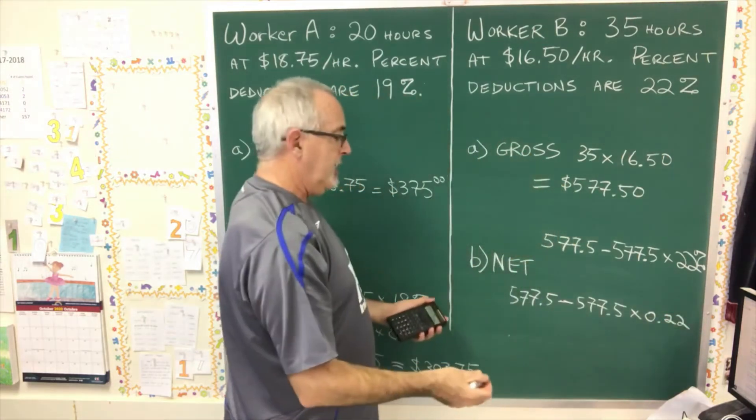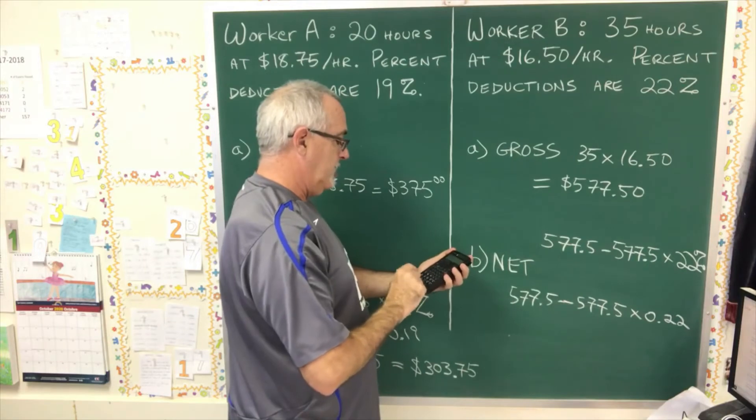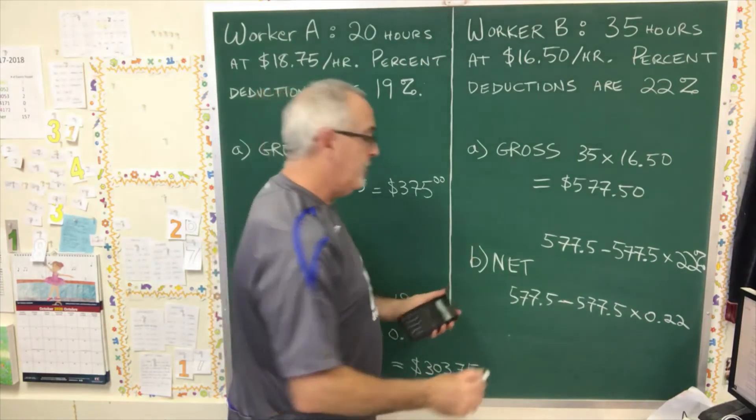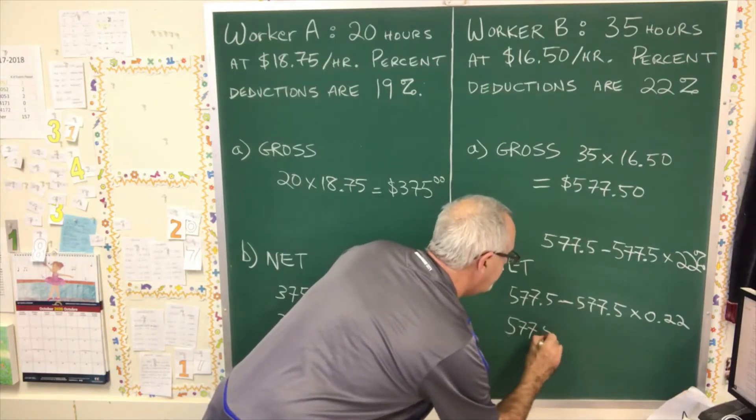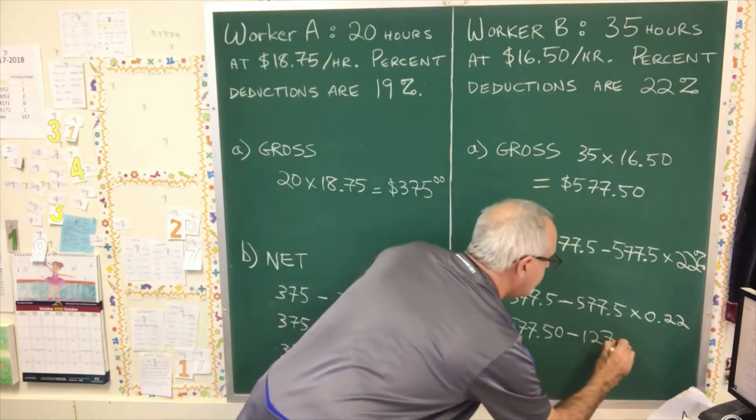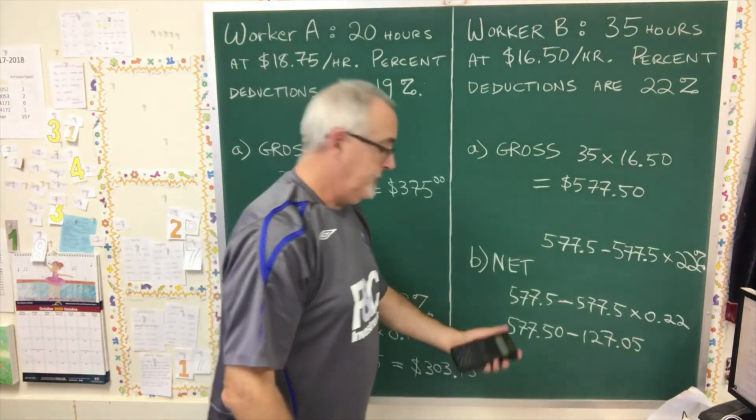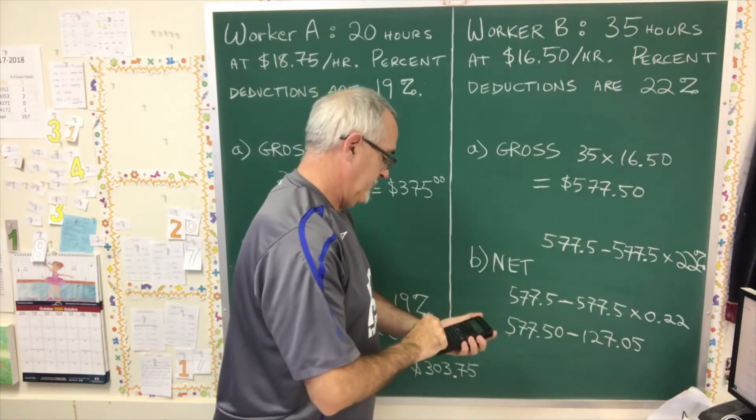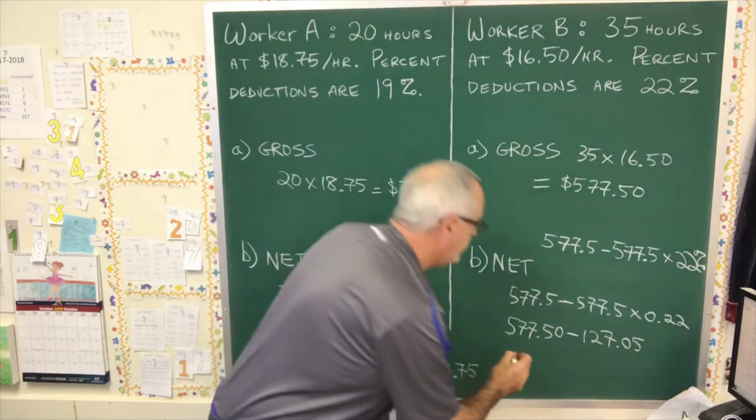Doing our multiplication, $577.50 times 0.22 is 127.05. Finally, we do our subtraction and we get $450.45.